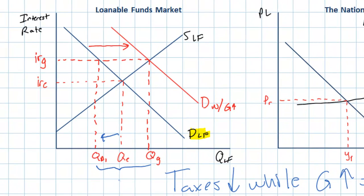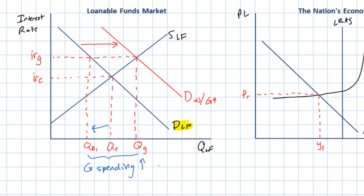Overall spending has increased, however a big chunk of this is new government spending. Government spending increases, but only at the expense of less private consumption and less private investment. The increase in government spending is somewhat offset by this fall in private spending. Households and firms must compete with the government for the limited funds available, and the higher interest rates resulting from the government's borrowing reduce private investment and consumption — this is the crowding out effect.